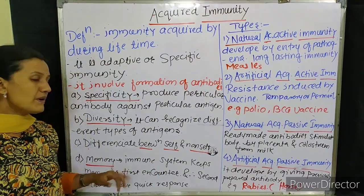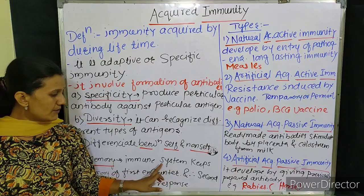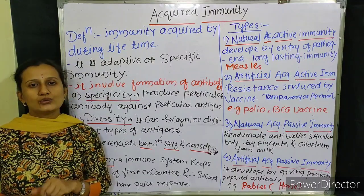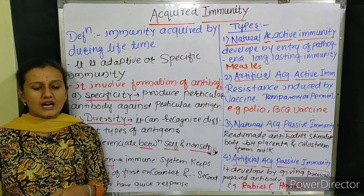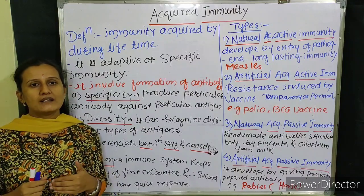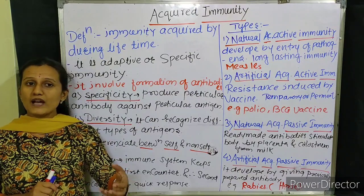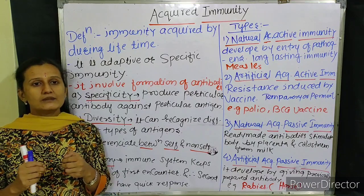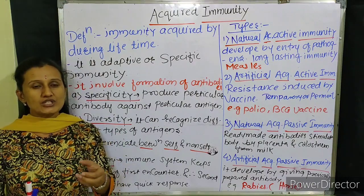The fourth characteristic feature is memory. Our acquired immunity keeps the memory of the first encounter with an antigen. When a person gets a disease for the first time — say, a particular type of fever — the bacteria or virus attacks for the first time. That first attack is called the first encounter with the body, and the body slowly learns from it: how that particular virus or bacteria attacks, how that antigen produces its proteins, and how those proteins affect the body.